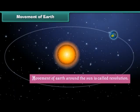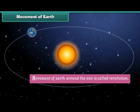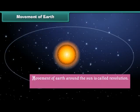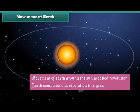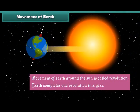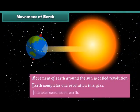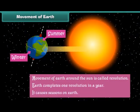Movement of Earth — Revolution: Movement of Earth around the sun is called revolution. Earth completes one revolution in a year. It causes seasons on Earth.